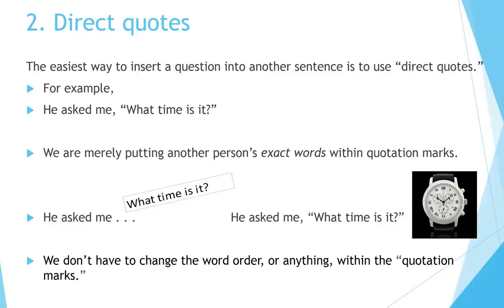Direct Quotes. The easiest way to insert a question into another sentence is to use direct quotes. For example: 'He asked me, What time is it?' We are merely putting another person's exact words within quotation marks. We don't have to change the word order or anything within the quotation marks.